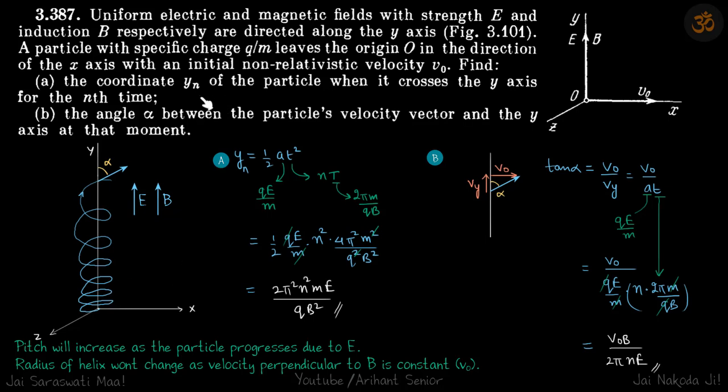When it strikes for the nth time, the distance travelled will be due to electric field so we can write it as half acceleration into t square. Acceleration will be qE/m and time taken for n crossings is n times time period which is 2πm/(qB). Putting the values we get the answer which is yn.